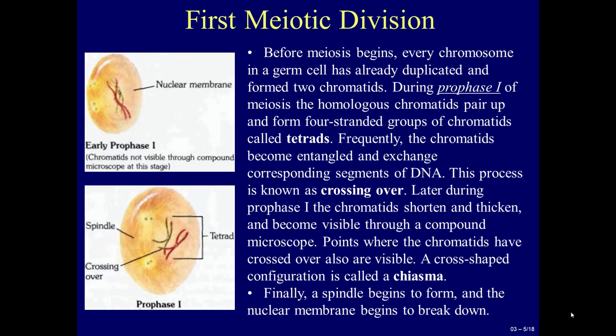This process is known as crossing over. Later, during prophase I, the chromatids shorten and thicken and become visible through a compound microscope. Points where the chromatids have crossed over are also visible. A cross-shaped configuration is called a chiasma. Finally, a spindle begins to form and the nuclear membrane begins to break down.